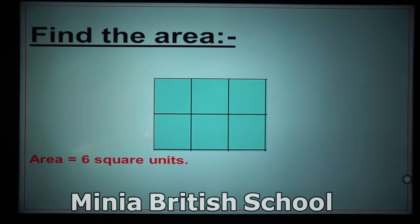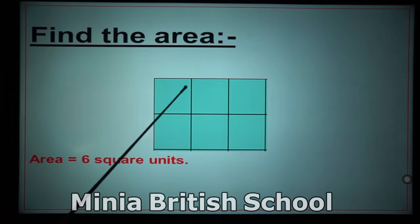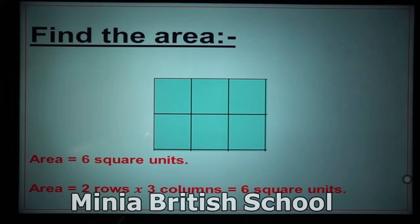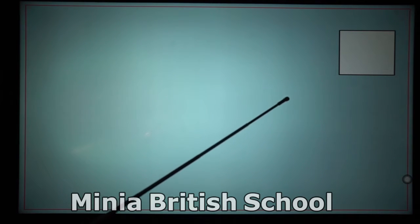So the area here equals 6 square units. What about the second method? I will multiply the number of rows times the number of columns. Here I have two rows and three columns, so the area equals 2 times 3, which also equals 6 square units. What about this figure — here I don't have small squares inside.